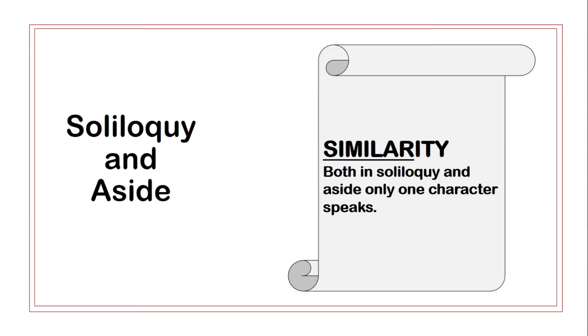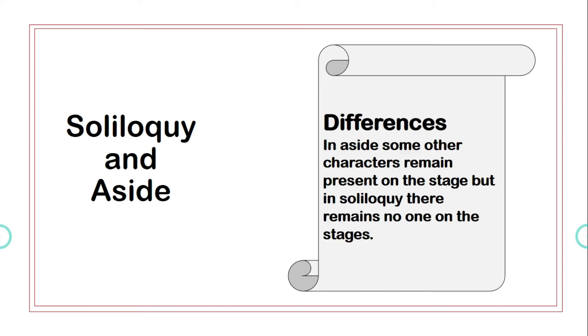What is the difference between soliloquy and aside? Soliloquy and aside are basically the same terms — in both, only one character speaks. But in a soliloquy, there is no other character on stage. In an aside, however, there are also other characters on stage. Additionally, a soliloquy is an uninterrupted speech, while an aside is typically only one to two lines — short comments.